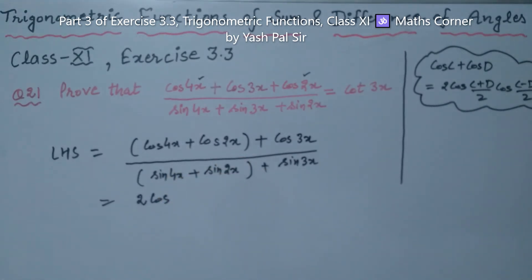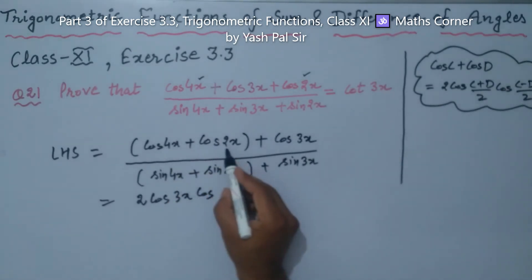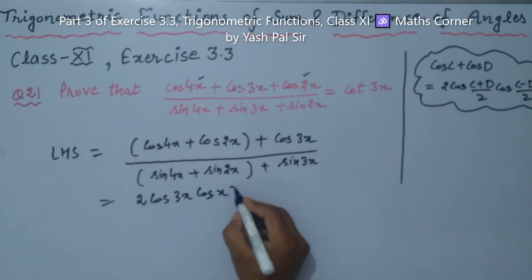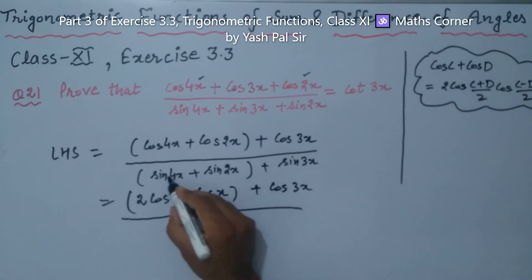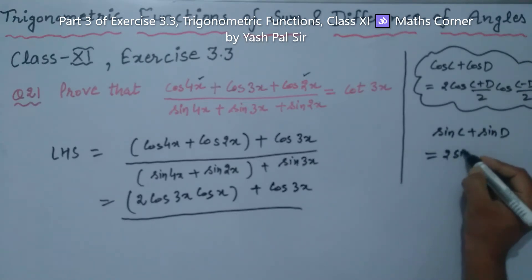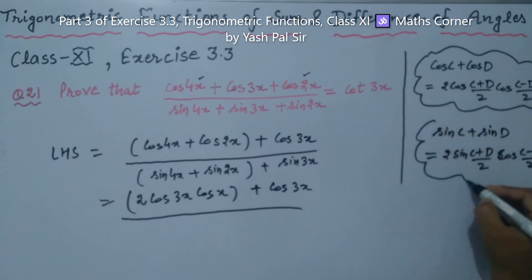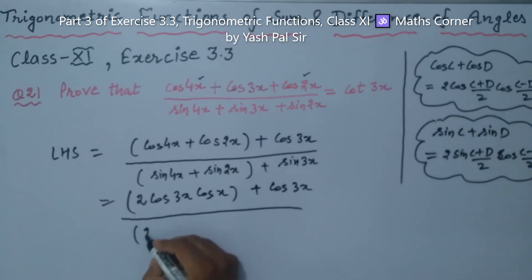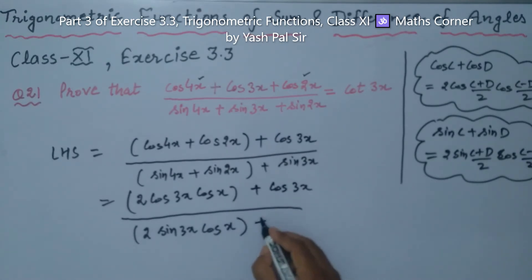Applying cos C plus cos D = 2 cos (C+D)/2 into cos (C-D)/2: numerator becomes 2 cos (4+2)/2 = 3x, into cos (4-2)/2 = x, plus cos 3x. Similarly for denominator using sin C plus sin D = 2 sin (C+D)/2 into cos (C-D)/2: denominator becomes 2 sin 3x into cos x, plus sin 3x.